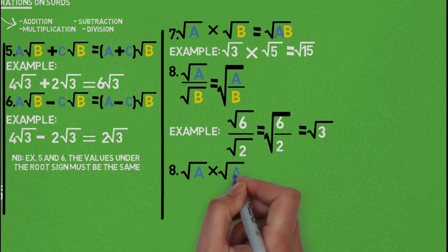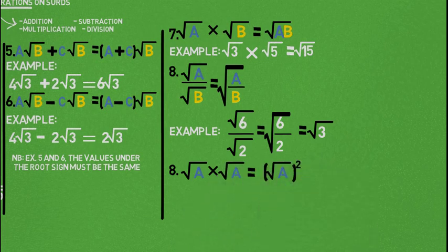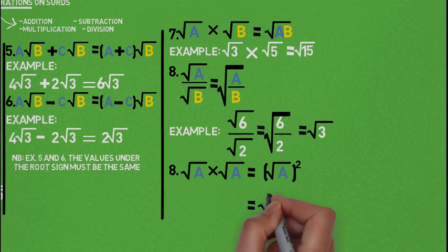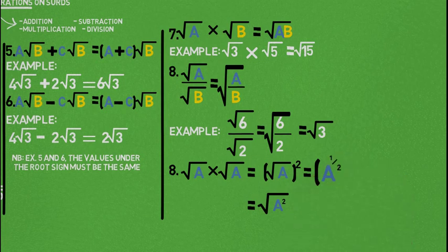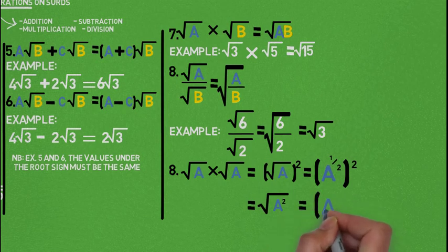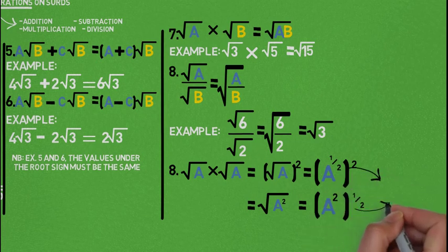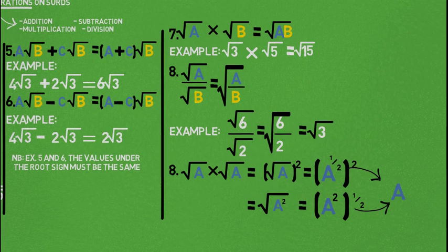The next property: root of A times root of A. This can give two possibilities. We can take this as root of A squared — that is, A to the power 1/2, then squared, giving A to the power 1. Or we can multiply the values under the root signs to get root of A squared, written as A squared all to the power half. In both cases, 1/2 times 2 gives 1, so the answer is A for both cases.